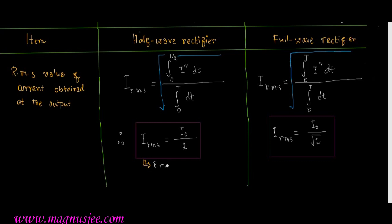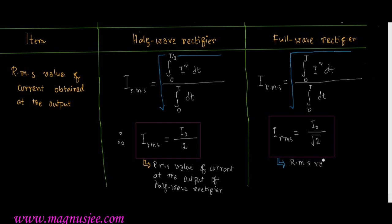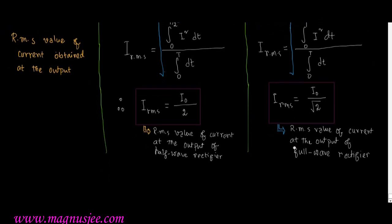To summarize: the RMS value of current at the output of the half wave rectifier is I_rms = I₀/2, while for the full wave rectifier, I_rms = I₀/√2.